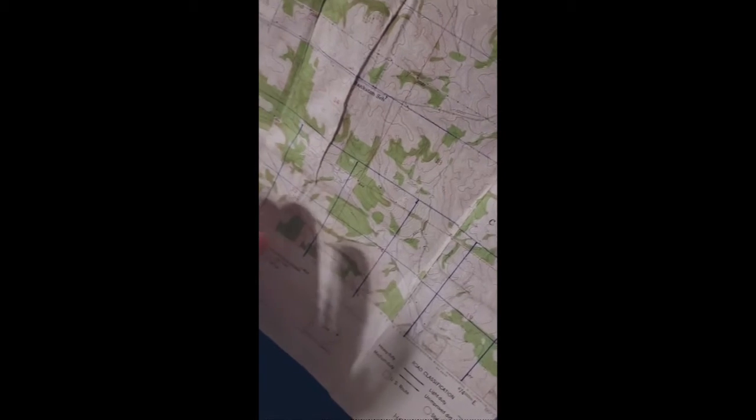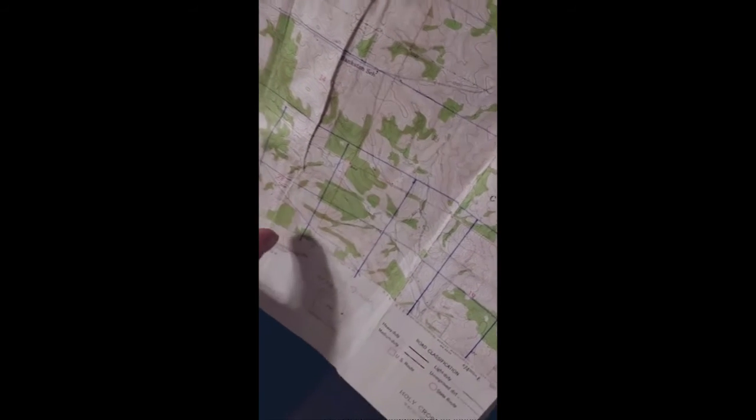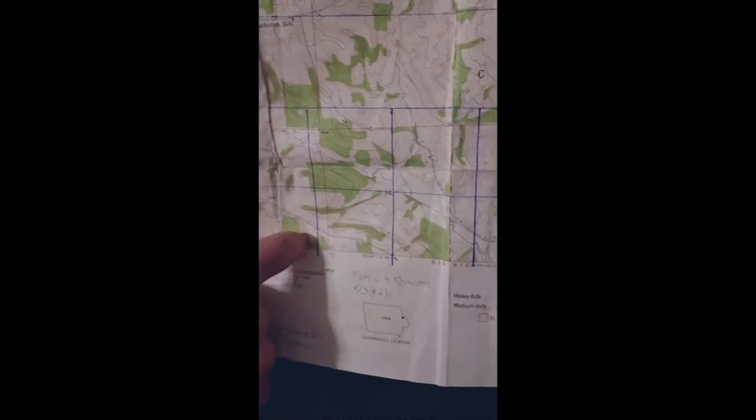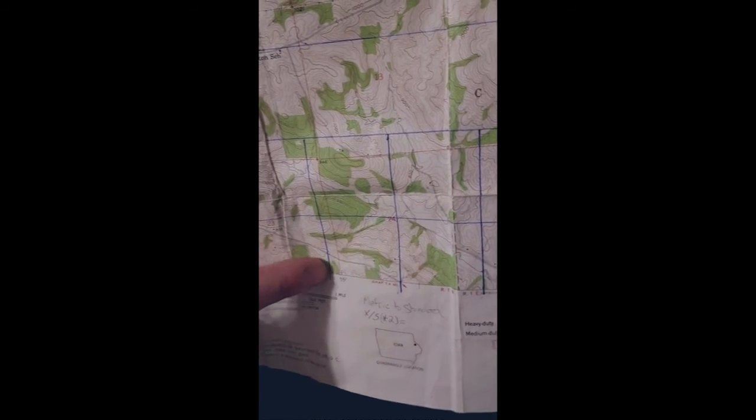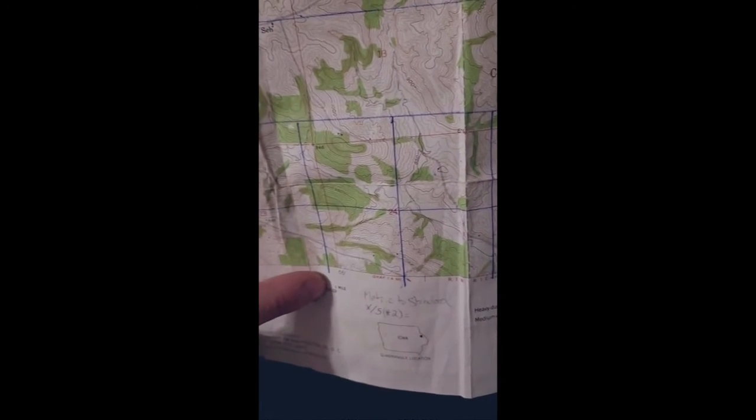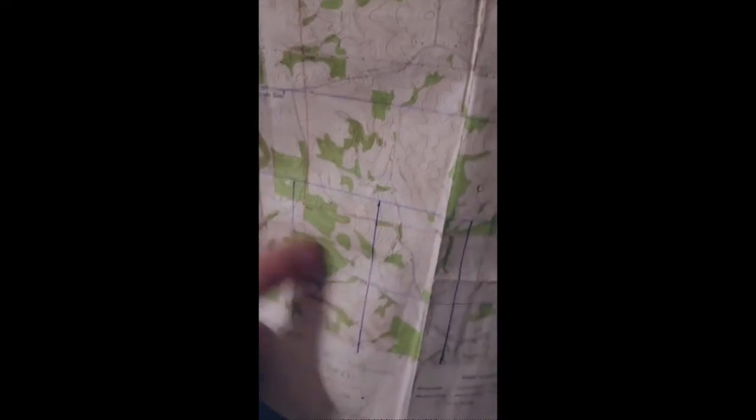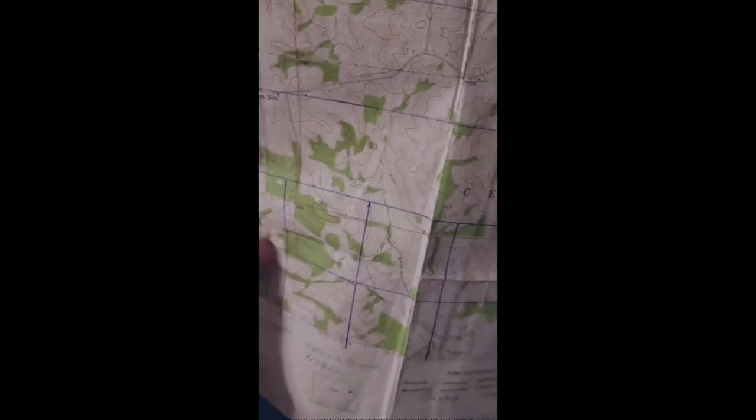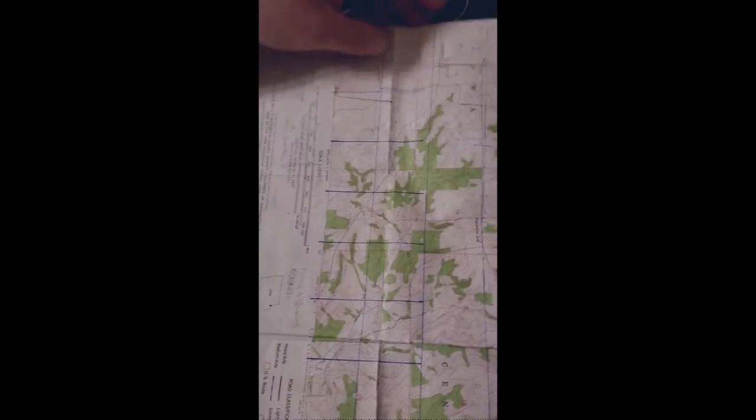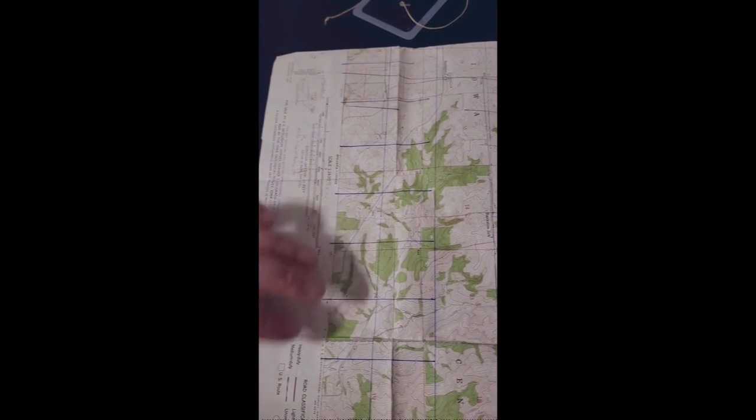On your map you're going to have your red lines that you're going to be using for general navigation. But you also have these blue lines and they'll be indicated by blue tick marks. I've highlighted these blue tick marks here so you can see where they're at. These blue tick marks are going to be the grid reference that you're going to use for your UTM.